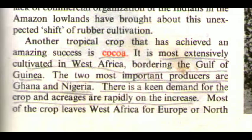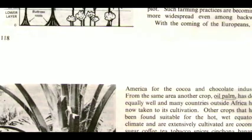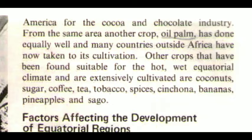Another tropical crop that has achieved enormous success is cocoa. It is most extensively cultivated in West Africa bordering the Gulf of Guinea; the two most important producers are Ghana and Nigeria. From the same area, oil palm has done equally well, and many countries outside Africa have now taken to its cultivation. Other crops extensively cultivated in the hot wet equatorial climate include coconuts, sugar, coffee, tea, tobacco, spices, cinchona, bananas, pineapples, and sago.